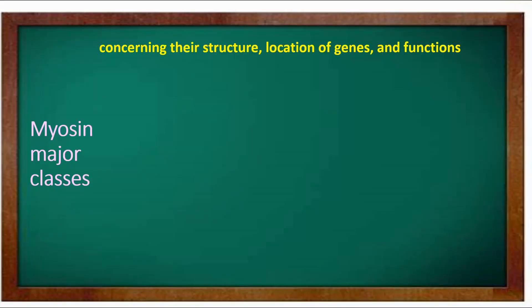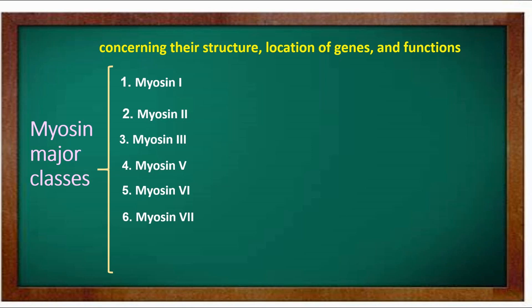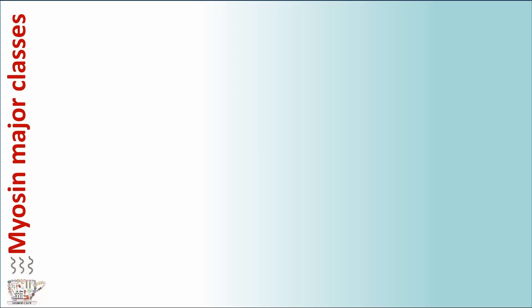Myosin major classes. Myosin can be divided into eight groups concerning their structure, location of genes, and function: Myosin 1, myosin 2, myosin 3, myosin 5, myosin 6, myosin 7, myosin 8, and myosin 11.